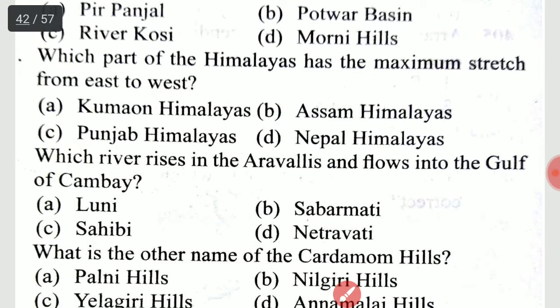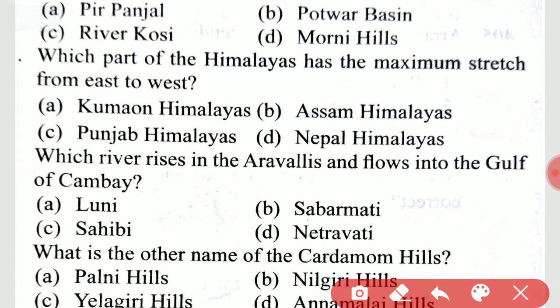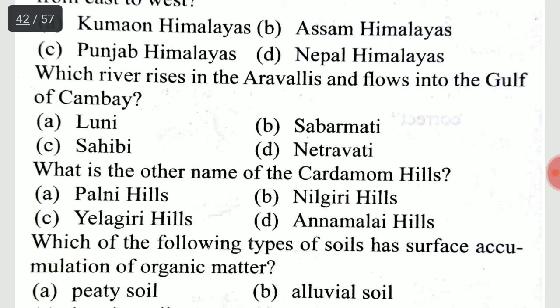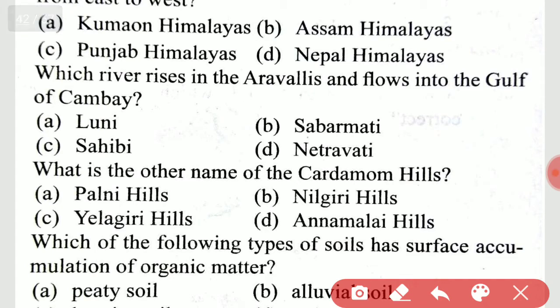Which part of the Himalayas has the maximum stretch from east to west? The maximum stretch is the Nepal Himalayas. Which river rises in the Aravallis and flows into the Gulf of Khambhat? It is the Sabarmati.